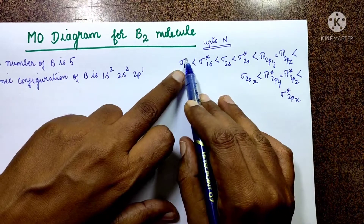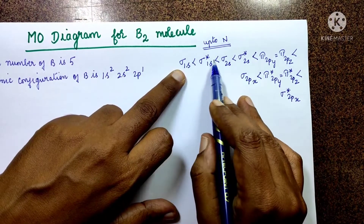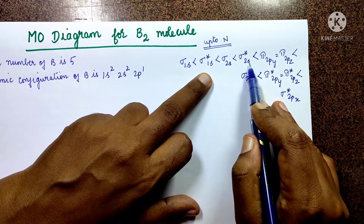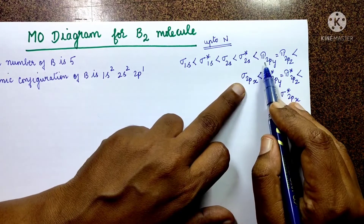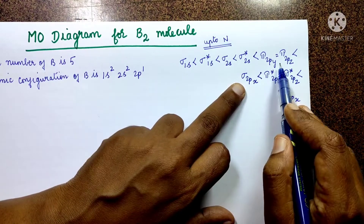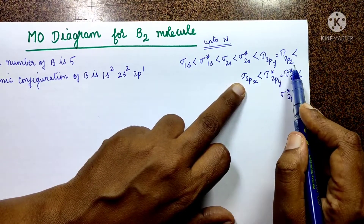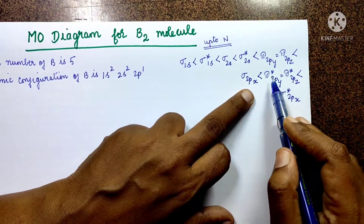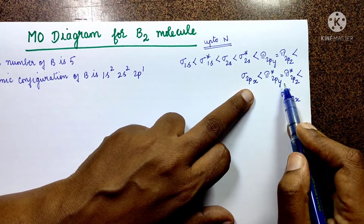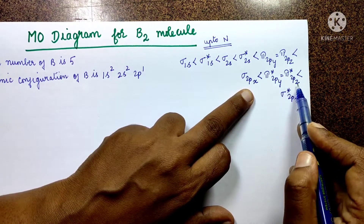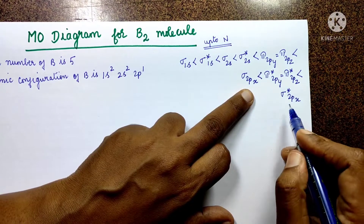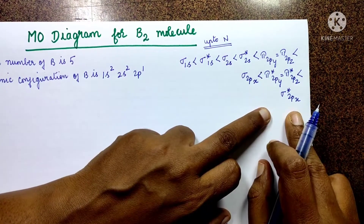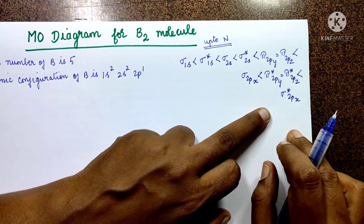So the full energy level order for nitrogen and below is: σ1s, σ*1s, σ2s, σ*2s, π2py = π2pz, σ2px, π*2py = π*2pz, and finally σ*2px as the highest energy level.